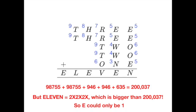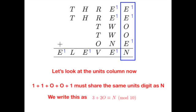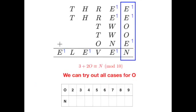With that sorted out, we can now look at the units column where 1 plus 1 plus O plus O plus 1 must end in the same digit as N. In mathematics, we write this as 3 plus 2O is congruent to N modulo 10, where modulo 10 just means that we are looking at the units digit. We can try out all possibilities for O. We know O couldn't be 0 since the number coded by TWO cannot start with a 0 and O couldn't be 1 since 1 is already represented by E. But the rest of the remaining numbers are all fair game.